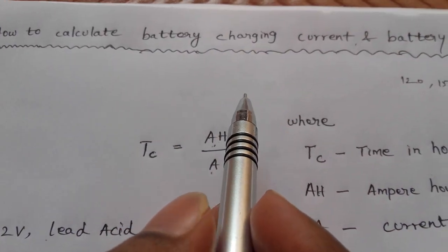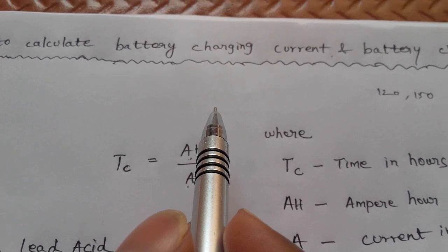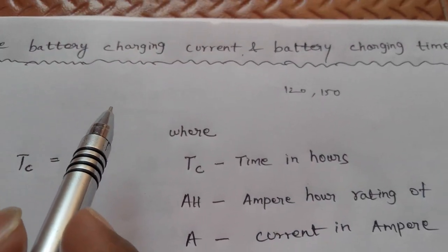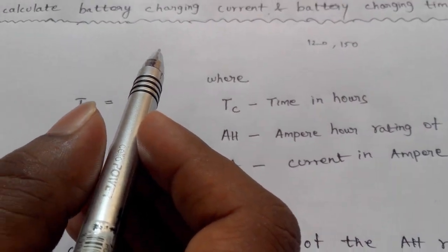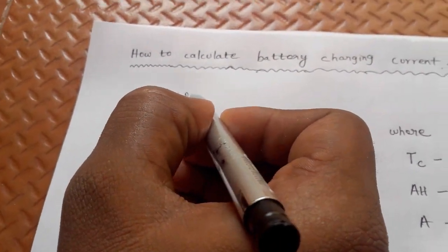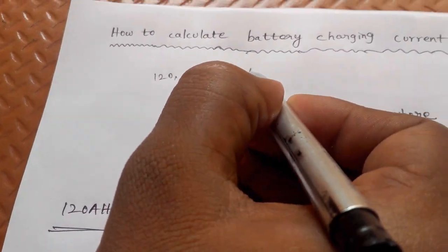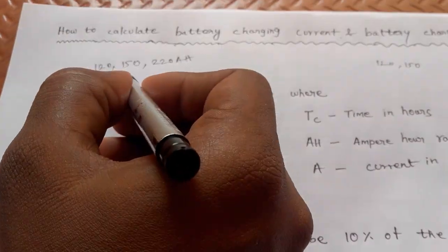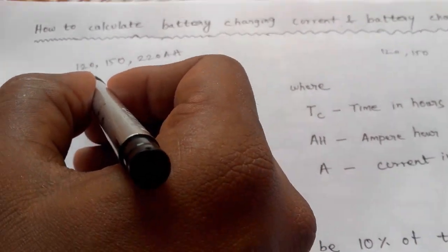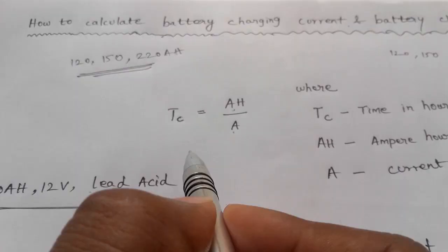In our house, the inverter will be 120Ah or 150Ah or 220Ah. How to calculate the charging current and charging time? This is our video.